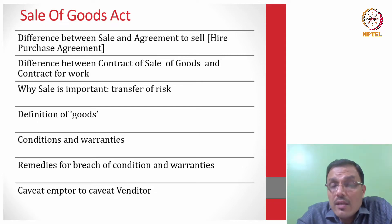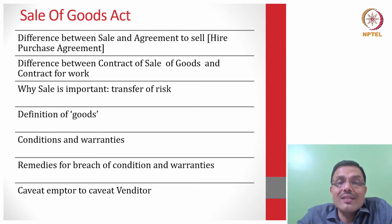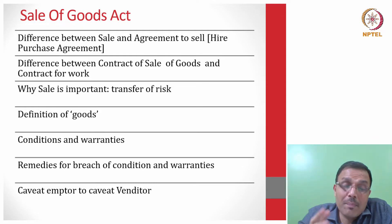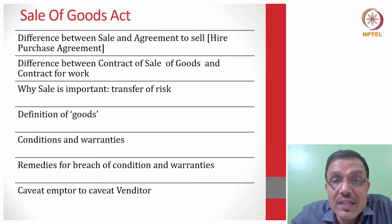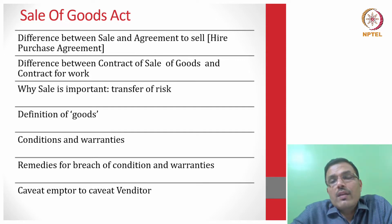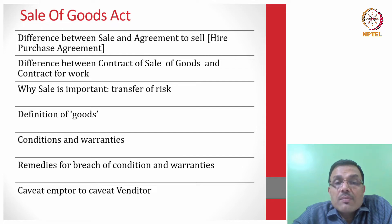These additional remedies are quite interestingly different. For example, the Sale of Goods Act identifies the rights of an unpaid seller — a seller who has made a sale but has yet to receive payment. He has been given certain extraordinary rights under the Sale of Goods Act. This means the drafters clearly said you do not have to rush to the courts to get remedies.